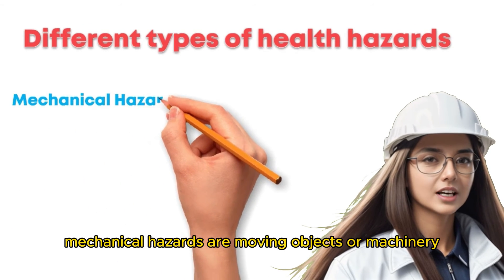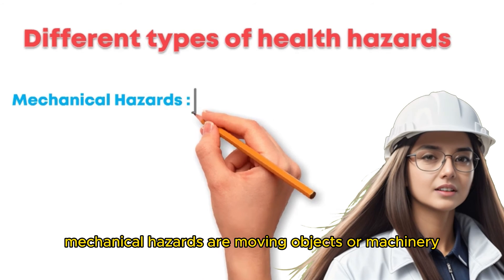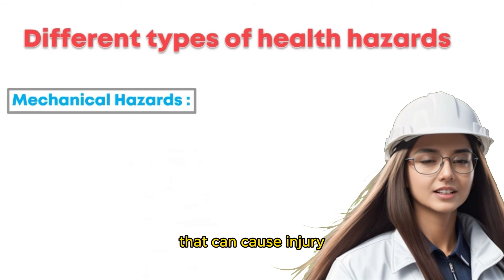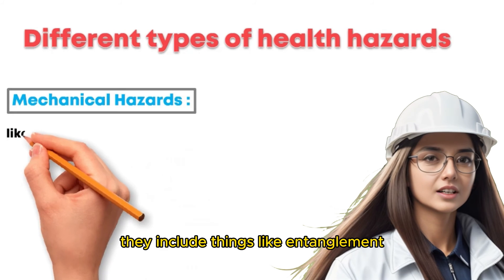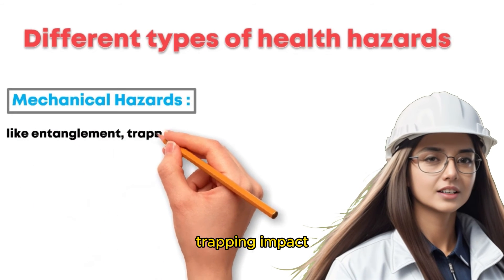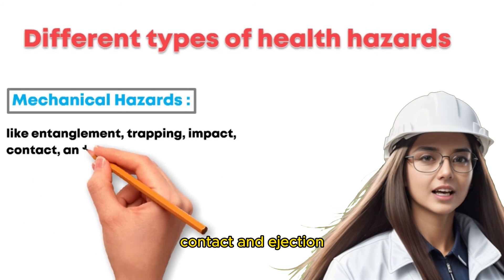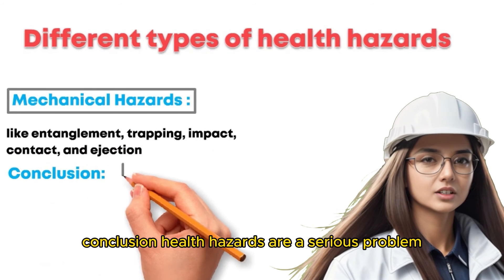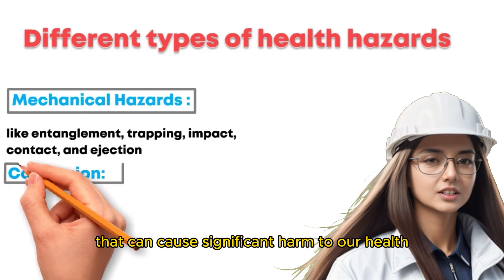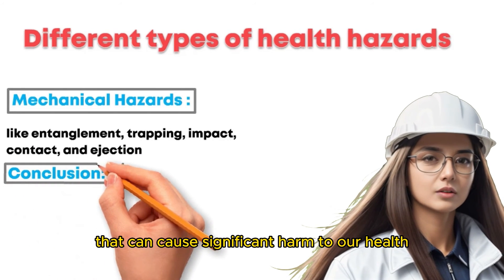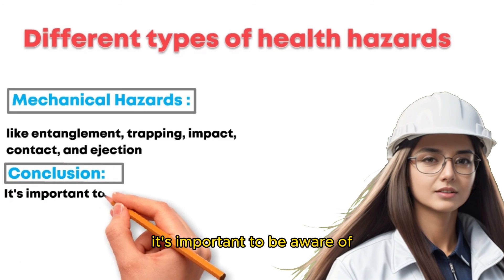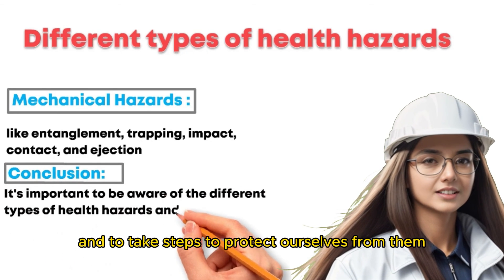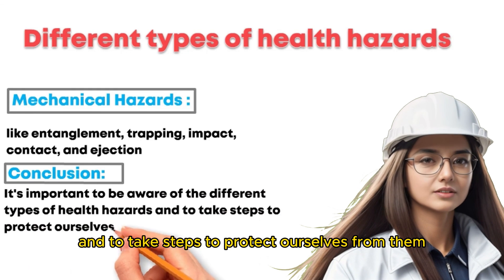Mechanical hazards. Mechanical hazards are moving objects or machinery that can cause injury. They include things like entanglement, trapping, impact, contact, and ejection. Health hazards are a serious problem that can cause significant harm to our health. It's important to be aware of the different types of health hazards and to take steps to protect ourselves from them.